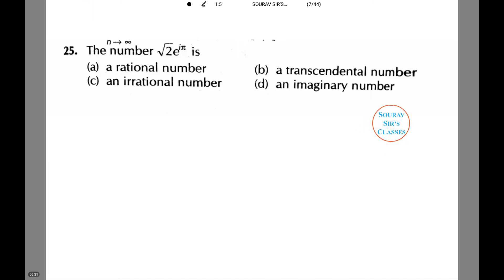In the next question, we are given the number √2 e^(πi). We need to determine if it is a rational number, a transcendental number, an irrational number, or an imaginary number.